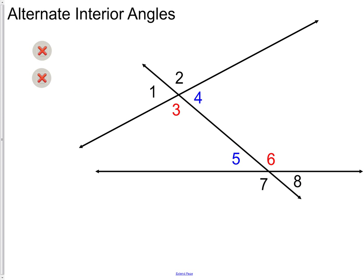The next grouping is alternate interior. When you think of interior, you need to take your two lines and imagine squashing them together. If we squashed our two lines together, we would take three, four, five, six, and squash them inside of our two lines.